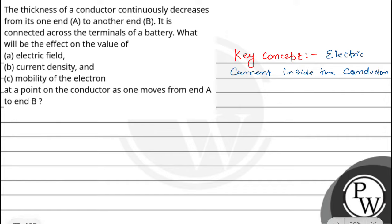I have described in the question that the thickness of the conductor continuously decreases from its one end A to end B. It continuously decreases. We need to analyze current density and mobility of the electron. So let's discuss.